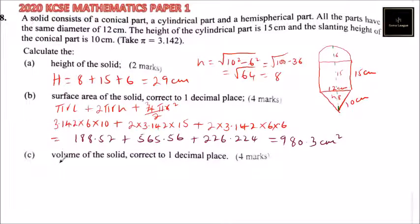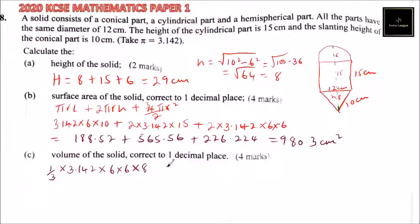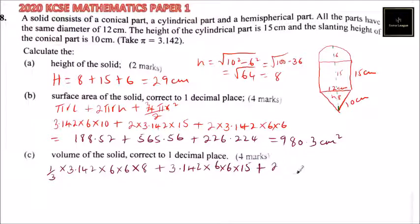From there we go to Part C: volume of the solid, correct to 1 decimal place. We need to find the volume of the conical part, which is one-third πr²h — that is 3.142 multiplied by 6 times 6 multiplied by height 8. Then we get the cylindrical part, which is base area times height: 3.142 multiplied by 6 times 6 multiplied by 15.